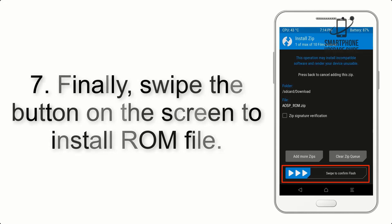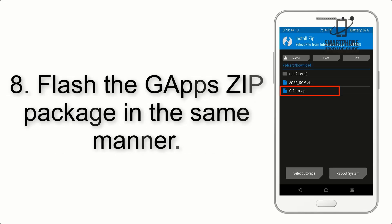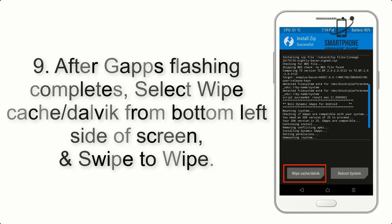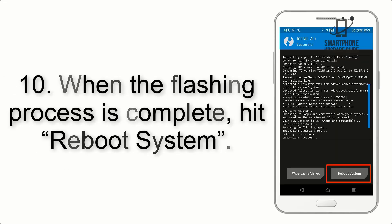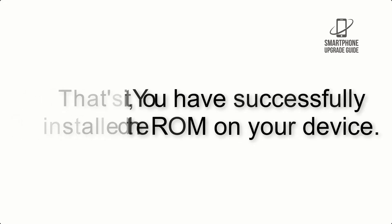Step 7: Swipe the button on the screen to install the ROM file. Step 8: Flash the GApps zip package in the same manner. Step 9: After GApps flashing completes, select Wipe Cache and Dalvik from the bottom left side of the screen and swipe to wipe. Step 10: When the flashing process is complete, hit Reboot System. You have successfully installed the ROM on your device.